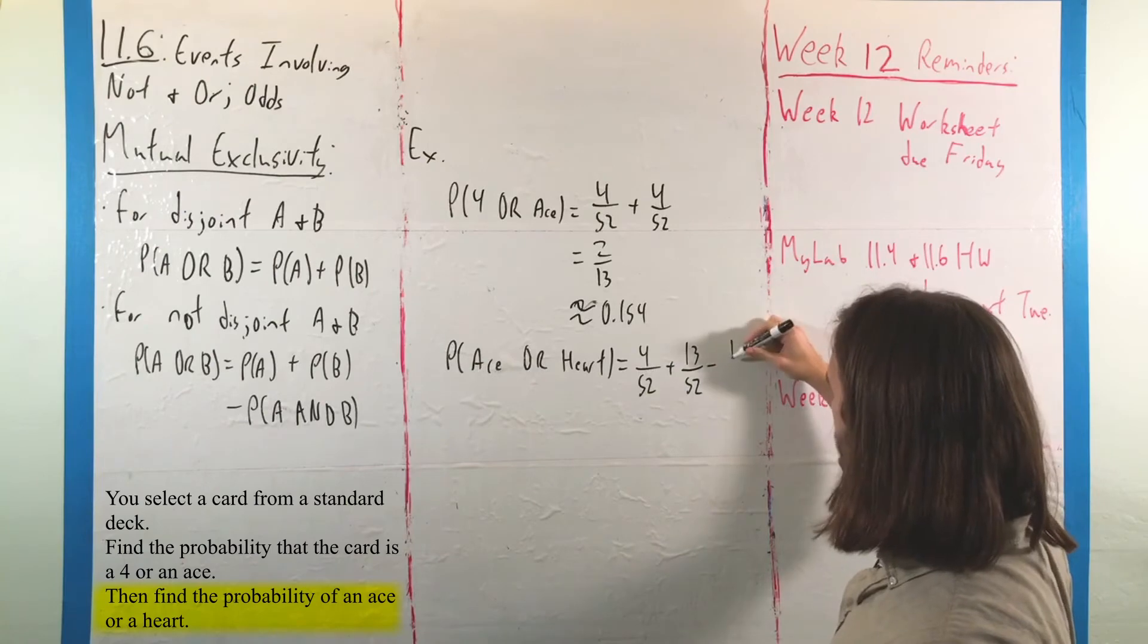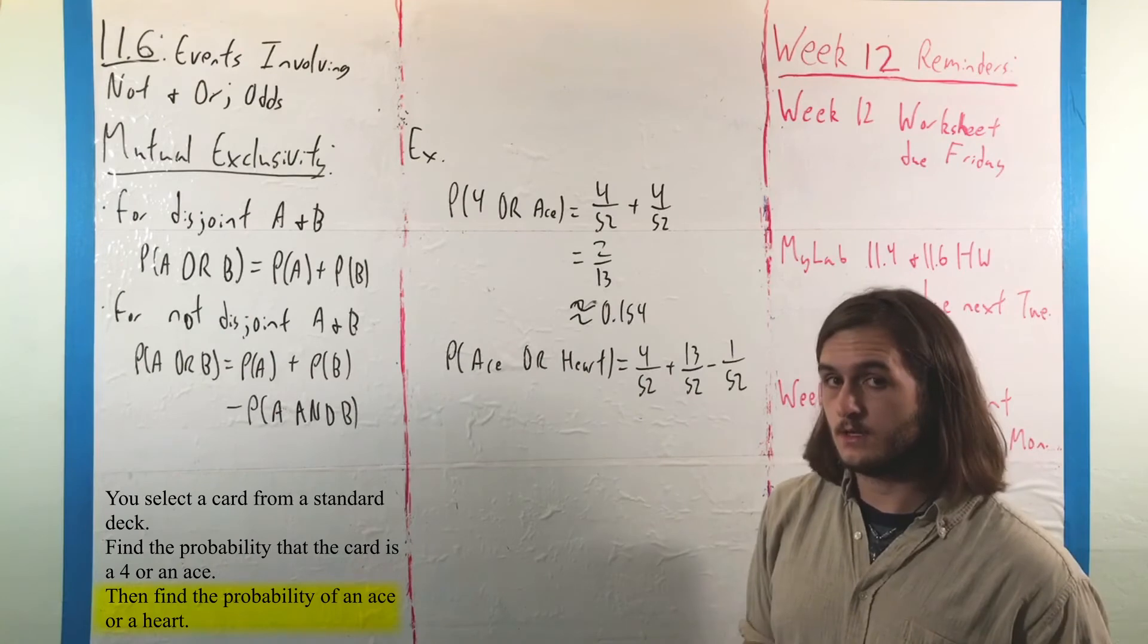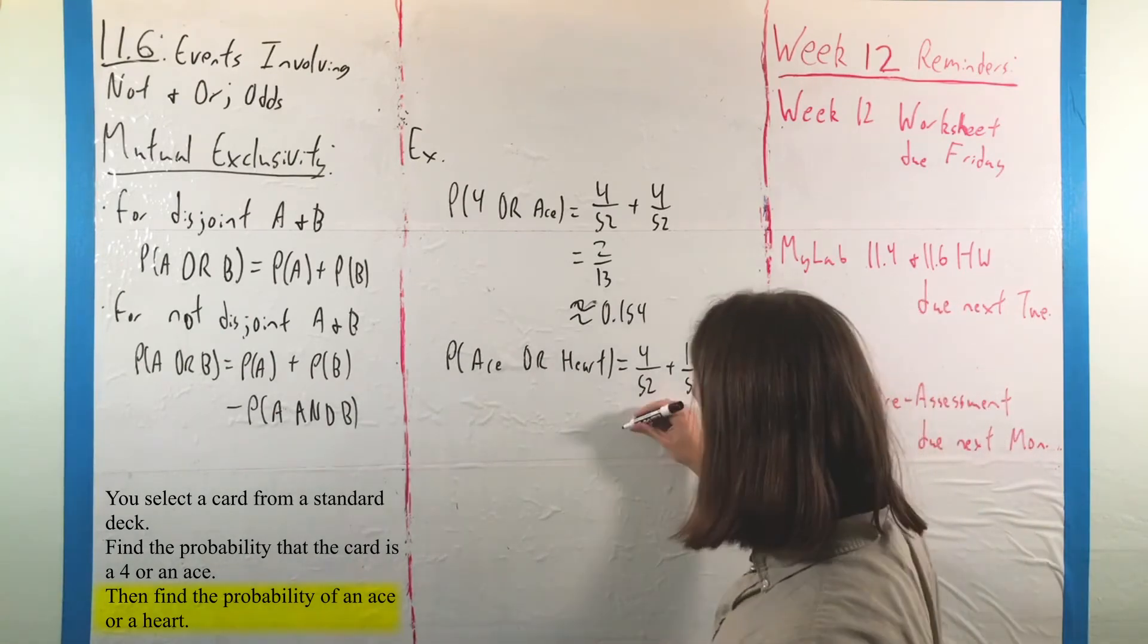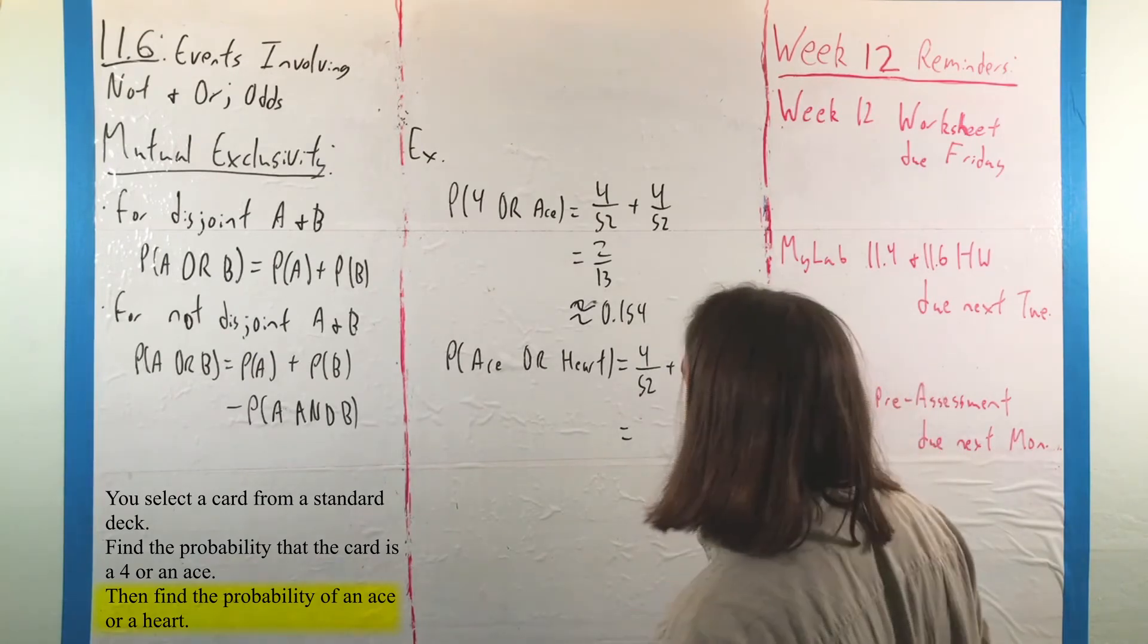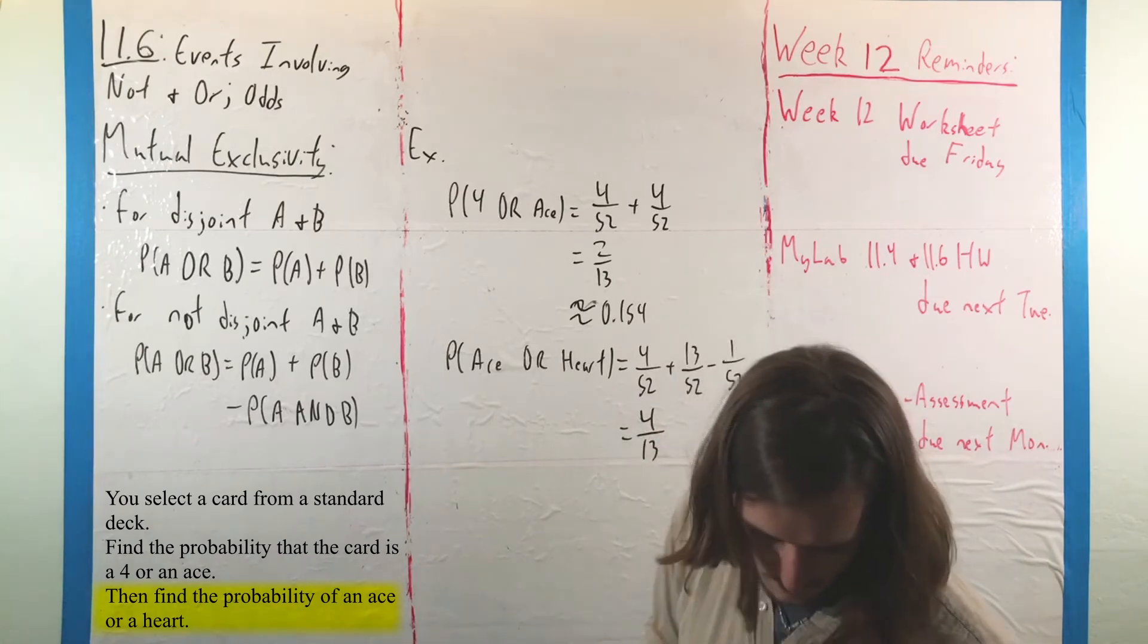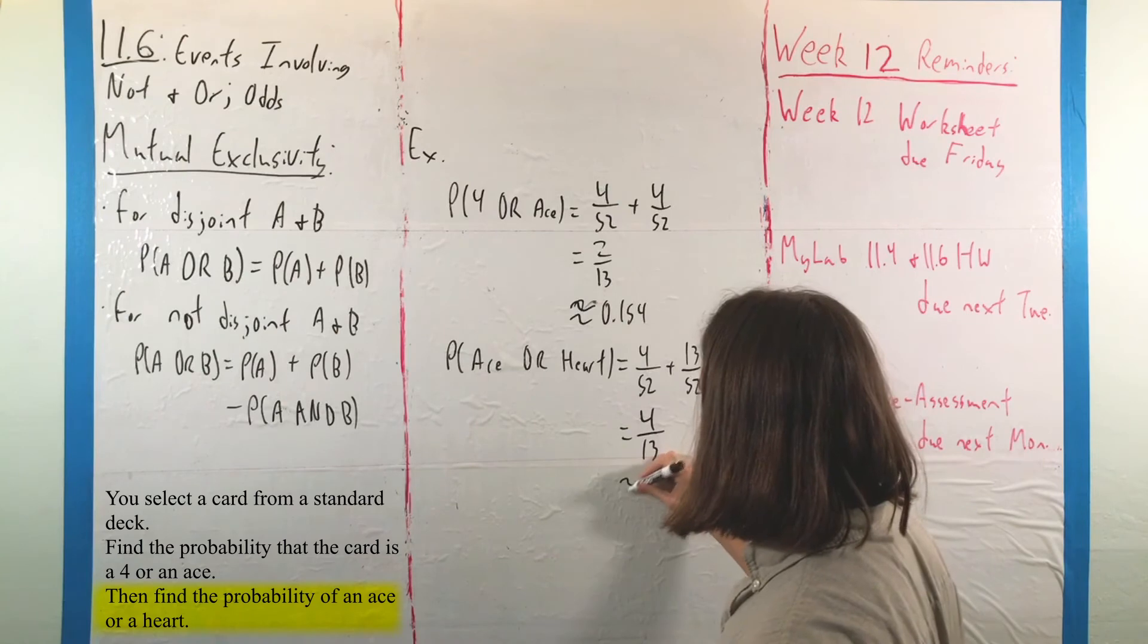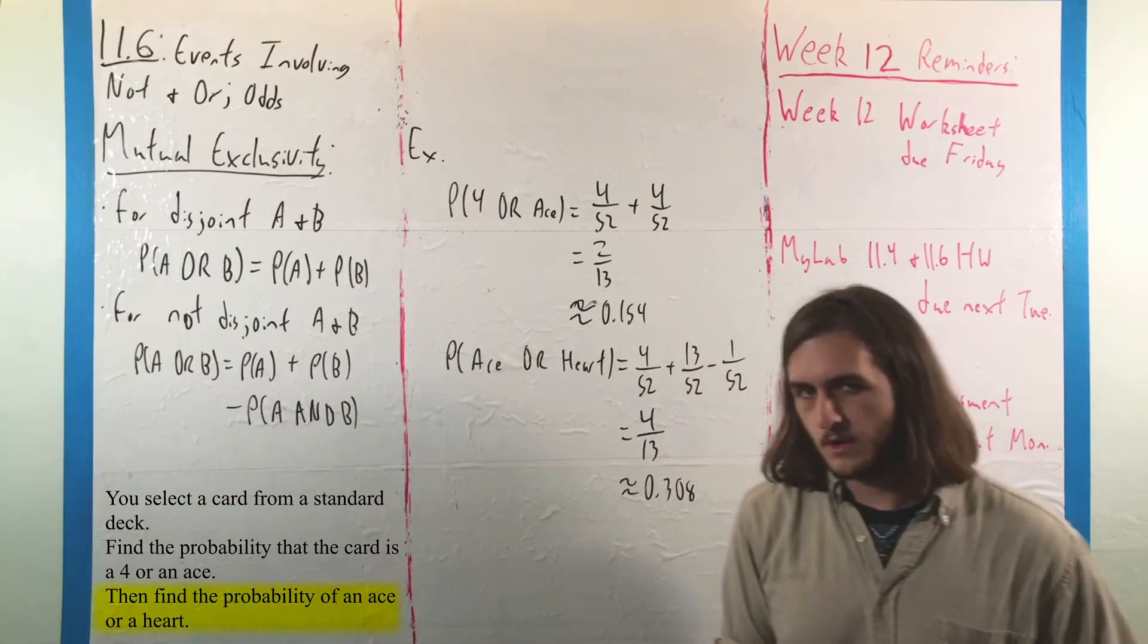So we have to remove that 1 out of 52 for the ace of hearts specifically, so we don't double count. And as a result, we would end up with a probability of 16 out of 52, or 4 out of 13, for a total probability of approximately 30.8%.